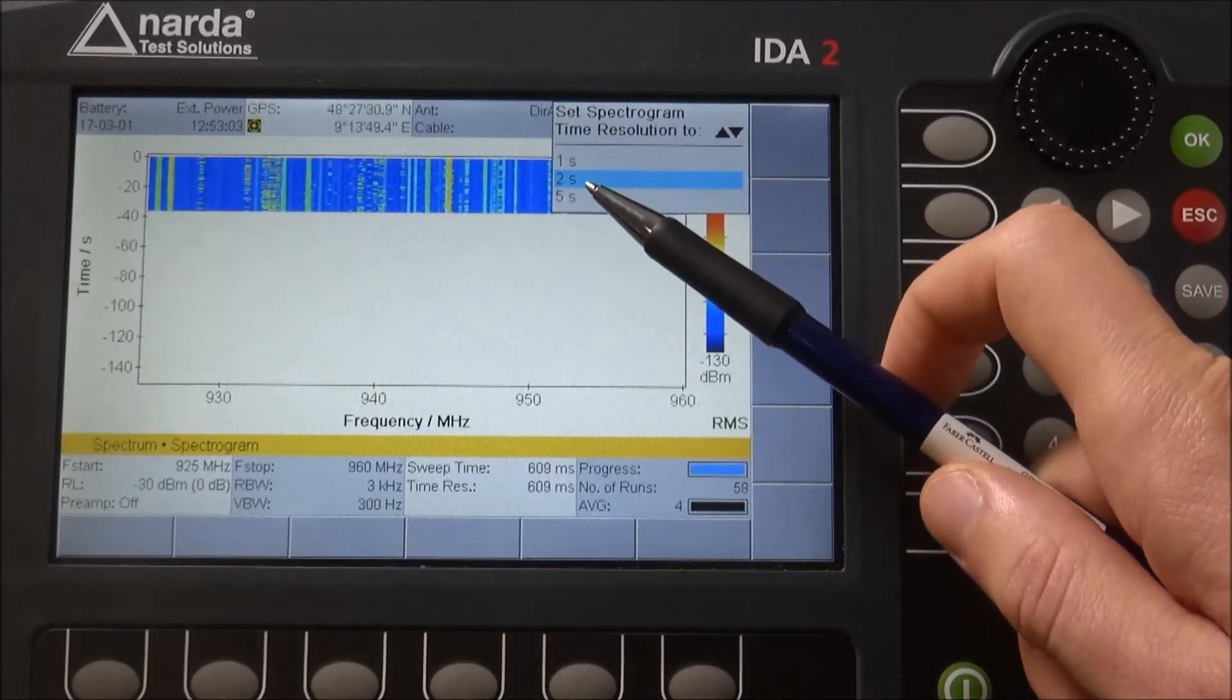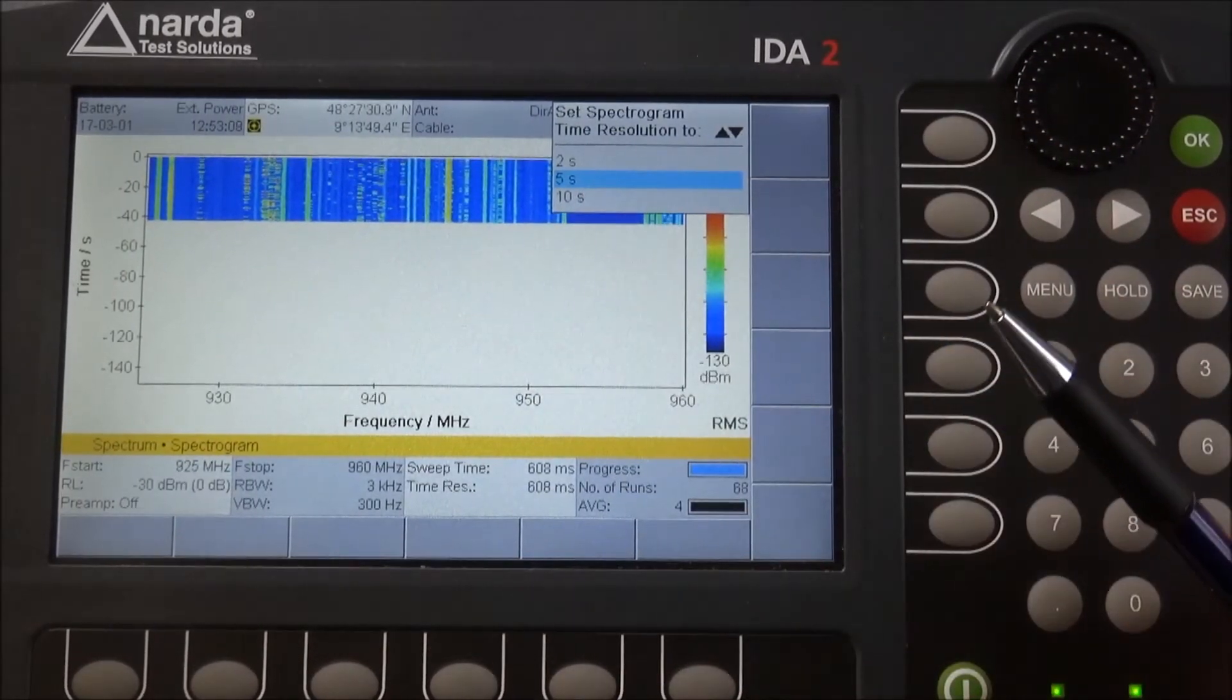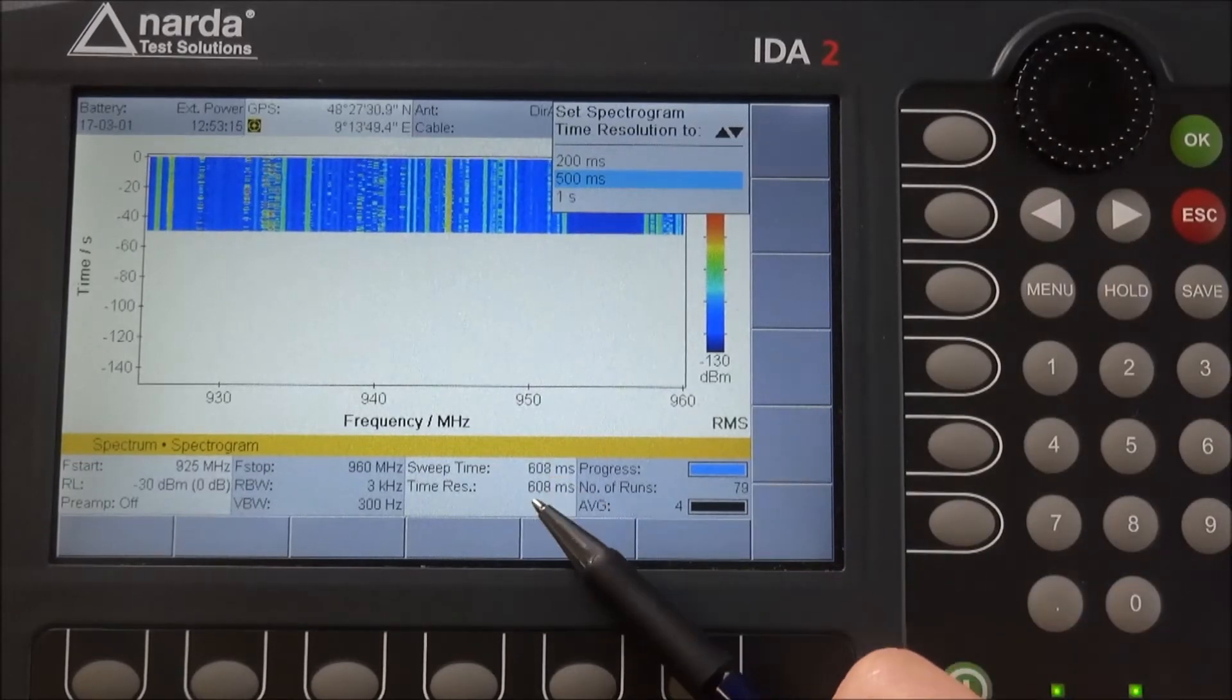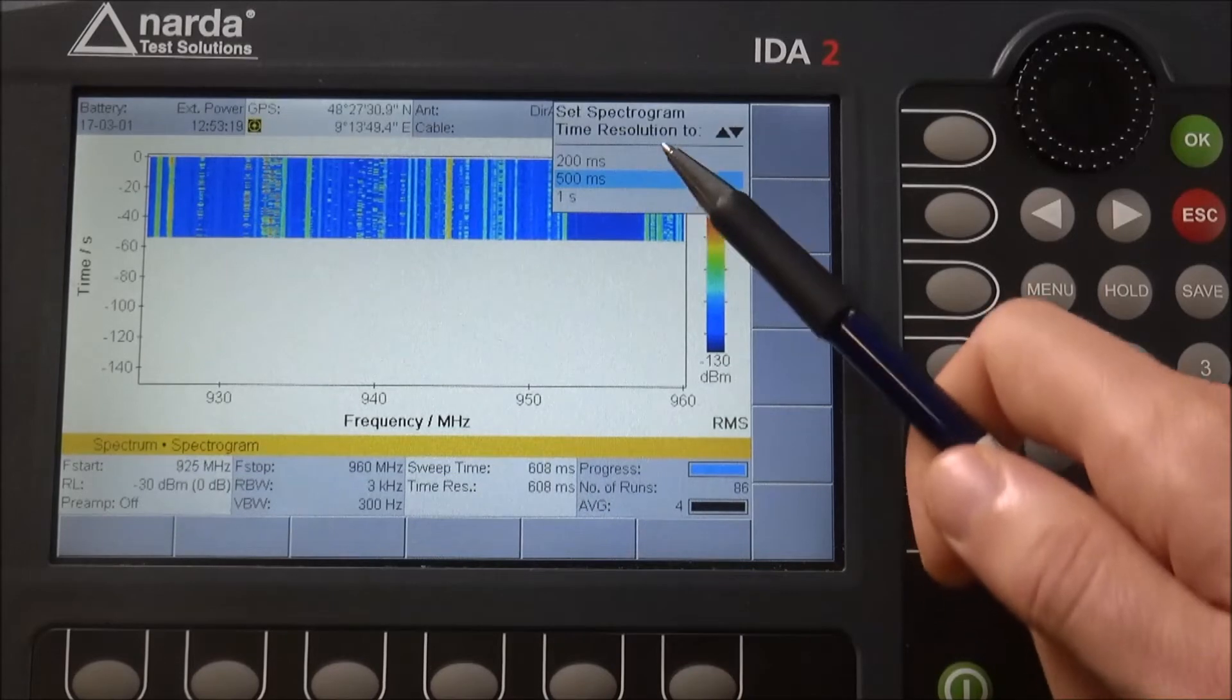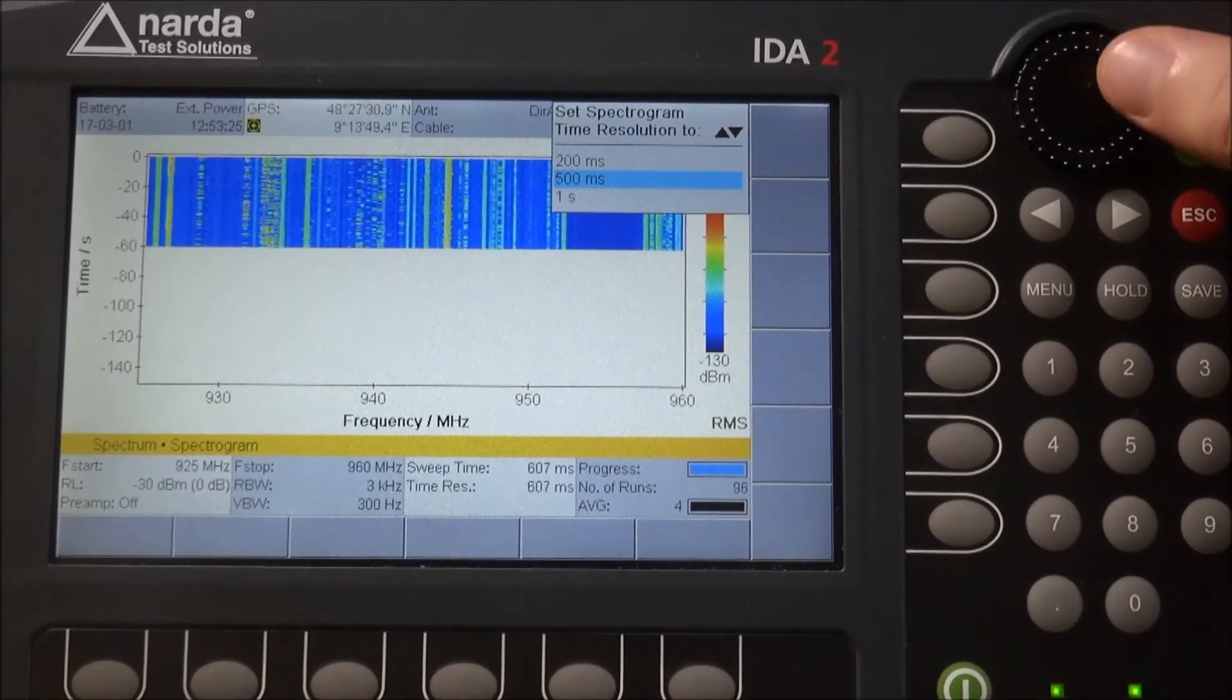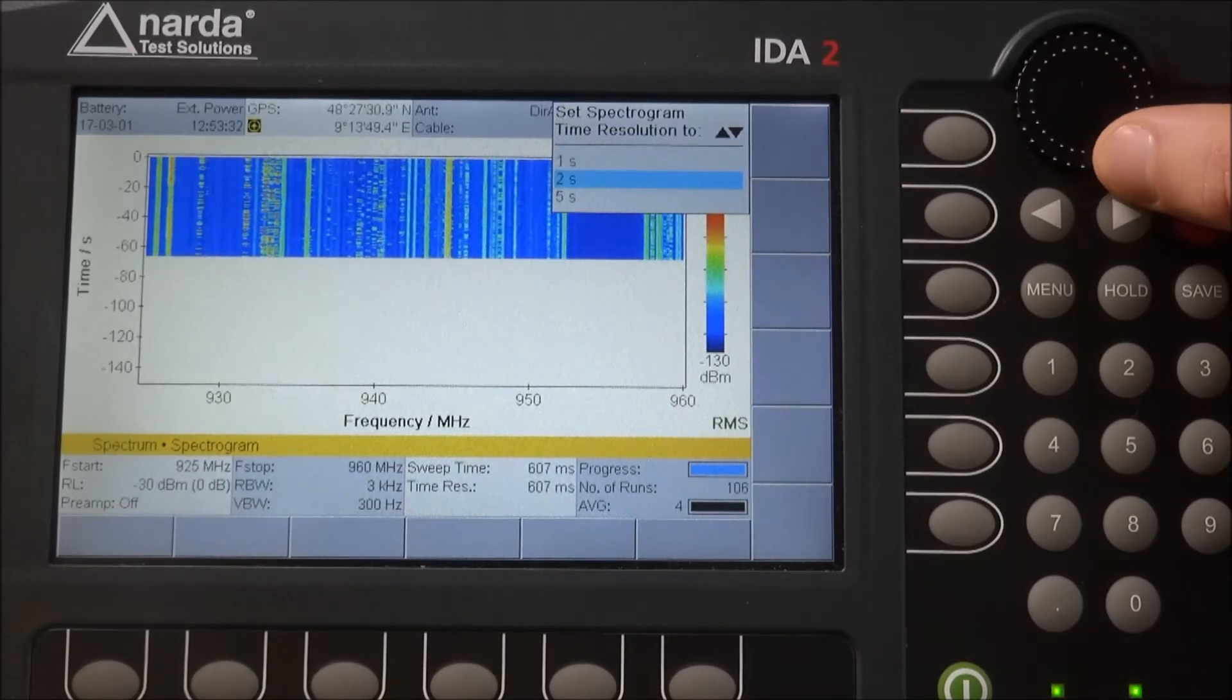For example, only every second or every fifth second will add an additional trace in your spectrogram. Taking something lower than 608 milliseconds wouldn't make sense because 500 milliseconds is still too low. We'd still have more generated spectra than can be displayed, so we should take, for example, two seconds.